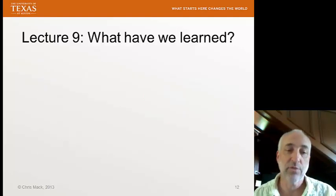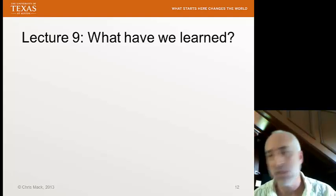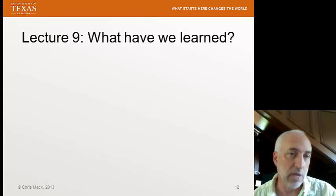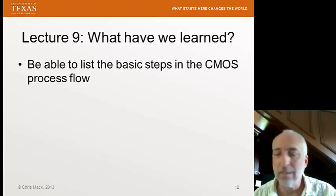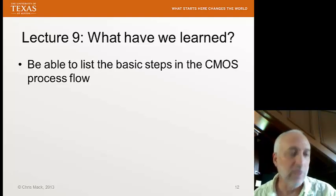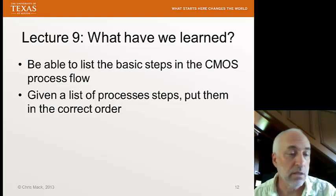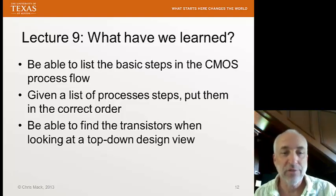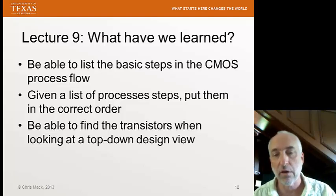That is a very brief description of the major steps. We're going to spend a lot of time this semester going through each individual process step in detail, but at least now you have a picture of how they all fit together to form a CMOS device and a circuit. What have we learned in Lecture 9? You should be able to list the basic steps in the CMOS process flow — the exact numbering is arbitrary, but the basic steps and their order you should know. And finally, you should be able to find a transistor: if you're looking at a top-down design view, look for gates and active areas and be able to point to where the transistors are in that design.